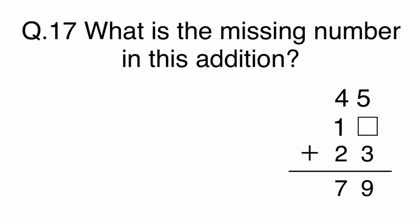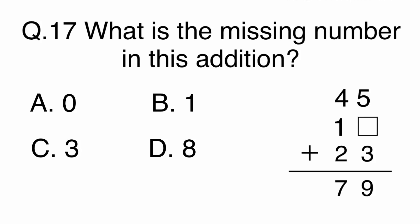Question 17. What is the missing number in this addition? A, 0. B, 1. C, 3. Or D, 8.